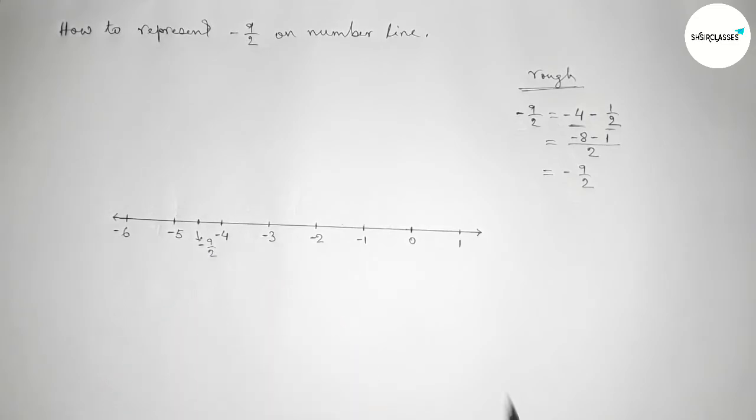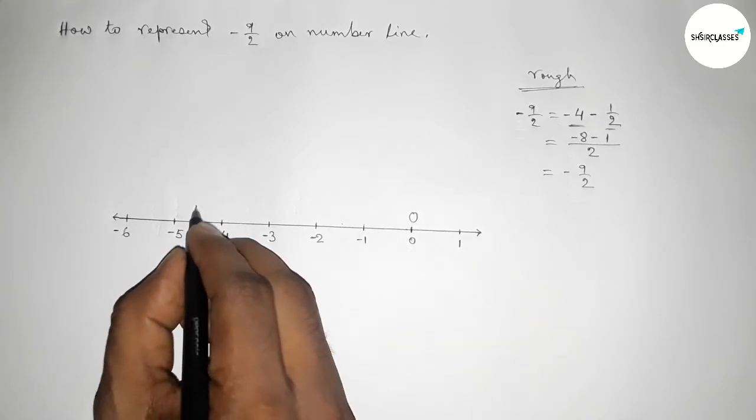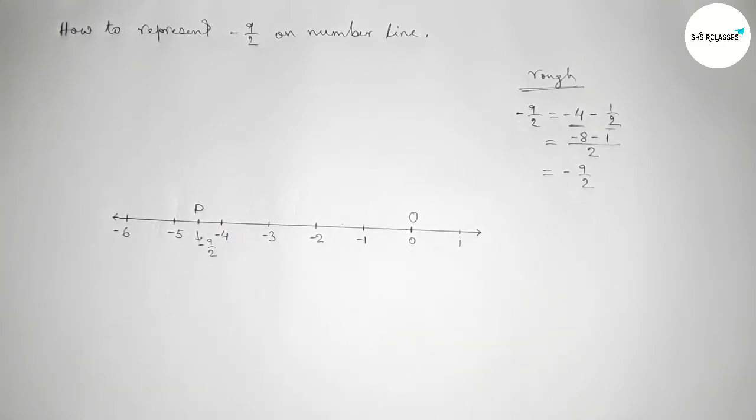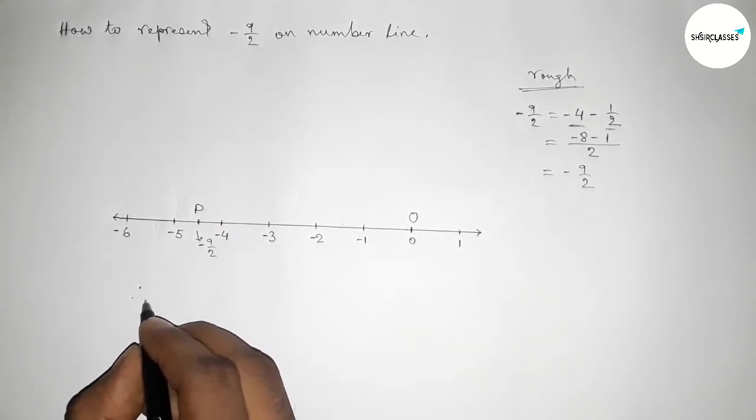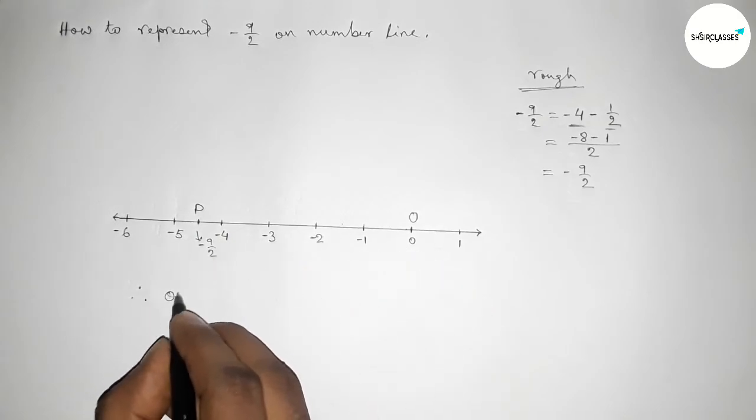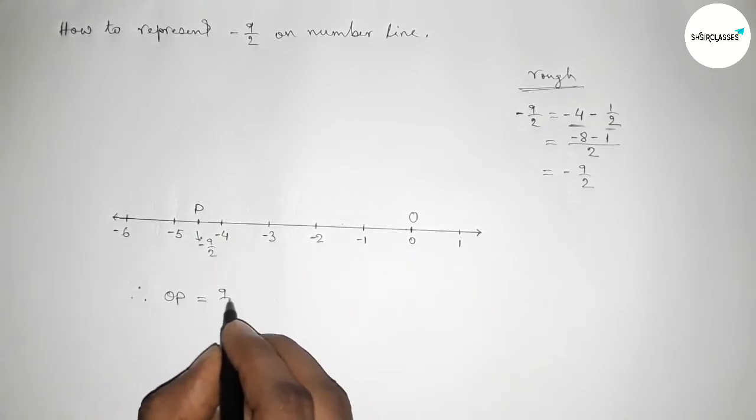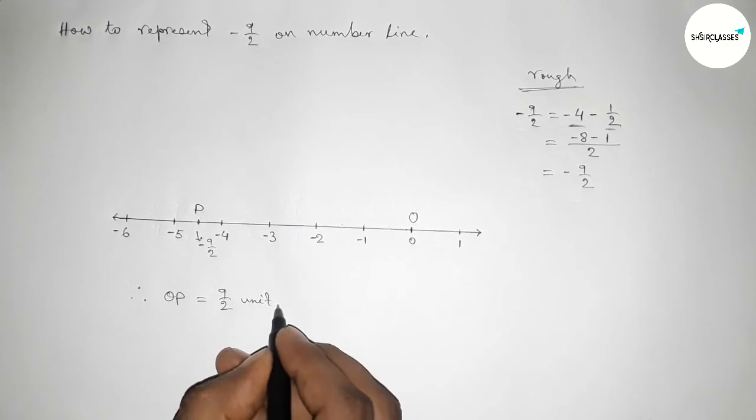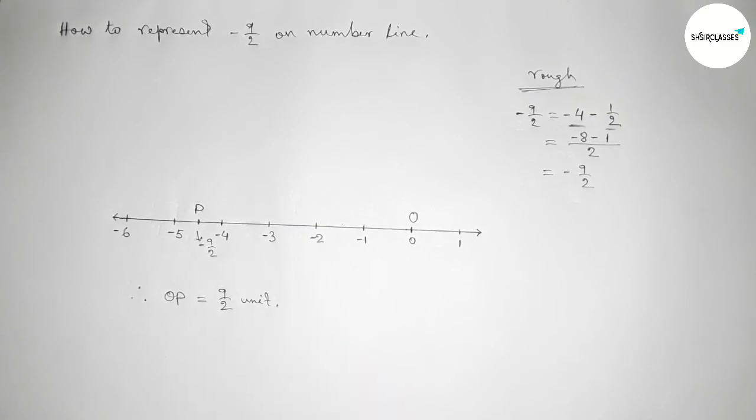Now taking here point O and here P, so therefore OP equals to we can write nine by two unit, since distance is always positive. So that's all, thanks for watching.